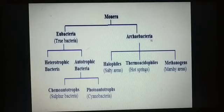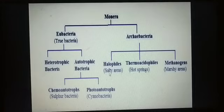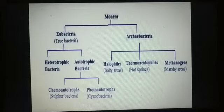Archaebacteria are very primitive bacteria. They are divided into three groups: halophils, thermoacidophils, and methanogens. Halophils are bacteria that can survive in very salty areas — they live in very salty environments. Thermoacidophils live in hot springs. Methanogens live in marshy areas.